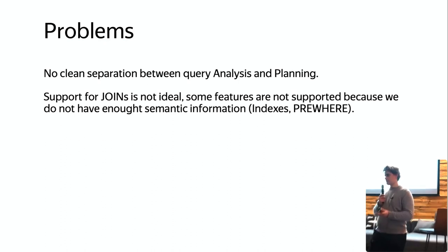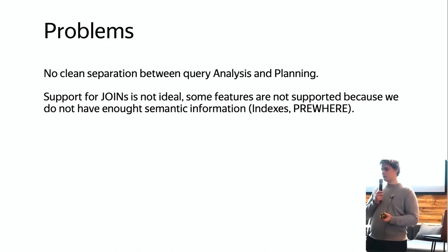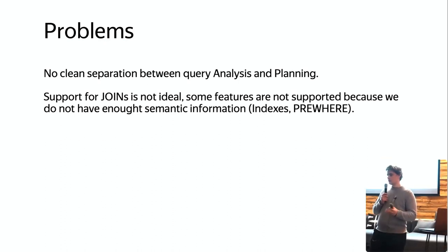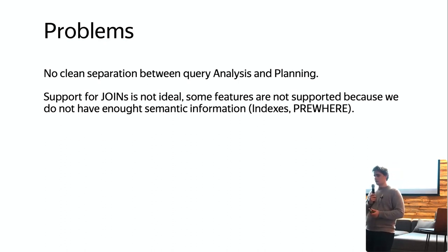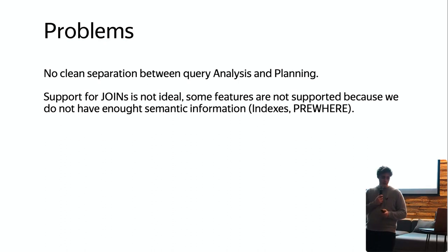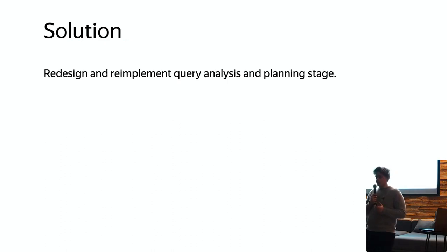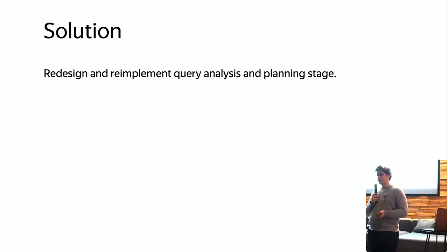There were also problems related to planning. In the old infrastructure we had no separation between analysis and planning, which was a big issue — it did not allow us to scale development. Support for JOINs was not ideal; some features were not supported because we did not have enough semantic information. Important features like indexes and per-shard processing were not ideal for JOINs. So we decided to redesign and implement query analysis and planning in ClickHouse.